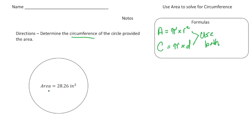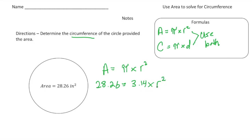We have to start off with what they've given us — we know the area. So let's write down the formula for area: area equals pi times radius squared. Now let's plug in what we know. The area is 28.26, so it's going to be 28.26 equals 3.14 times our radius squared. Now we're going to solve for the radius by dividing both sides by 3.14. These cancel out, and we end up with radius squared equals 28.26 divided by 3.14, which is 9.